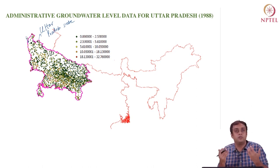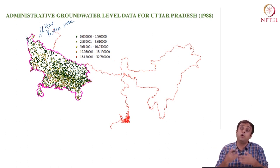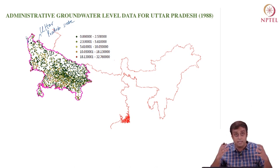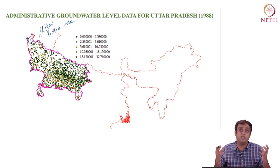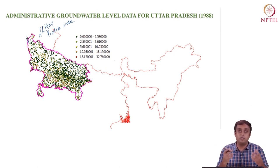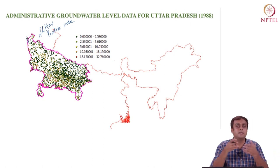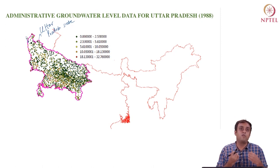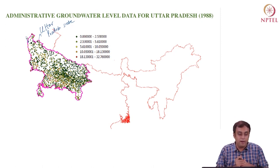Whenever groundwater is depleting or the level of groundwater depth is going down quite a bit, that provides a signal to the Central Groundwater Board to intervene to control this decline. Groundwater depletion is a very serious issue in India today. There are multiple agencies — not only the CGWB (Central Groundwater Board), but also the Uttar Pradesh Groundwater Board — which monitor groundwater levels. Both central and state agencies maintain their own network of monitoring wells because this issue is so important.